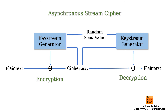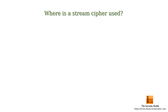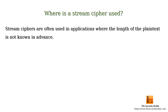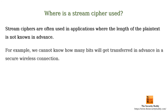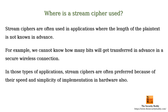So where is a stream cipher used? Stream ciphers are often used in applications where the length of the plain text is not known in advance. For example, we cannot know how many bits will get transferred in advance in a secure wireless connection. In those types of applications, stream ciphers are often preferred because of their speed and simplicity of implementation in hardware.